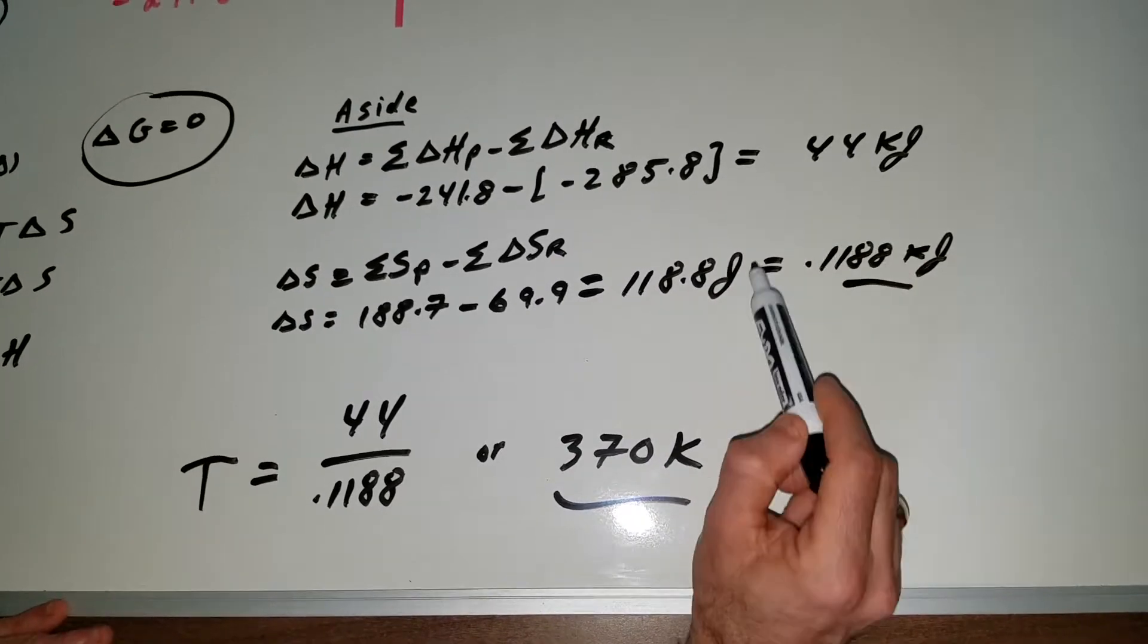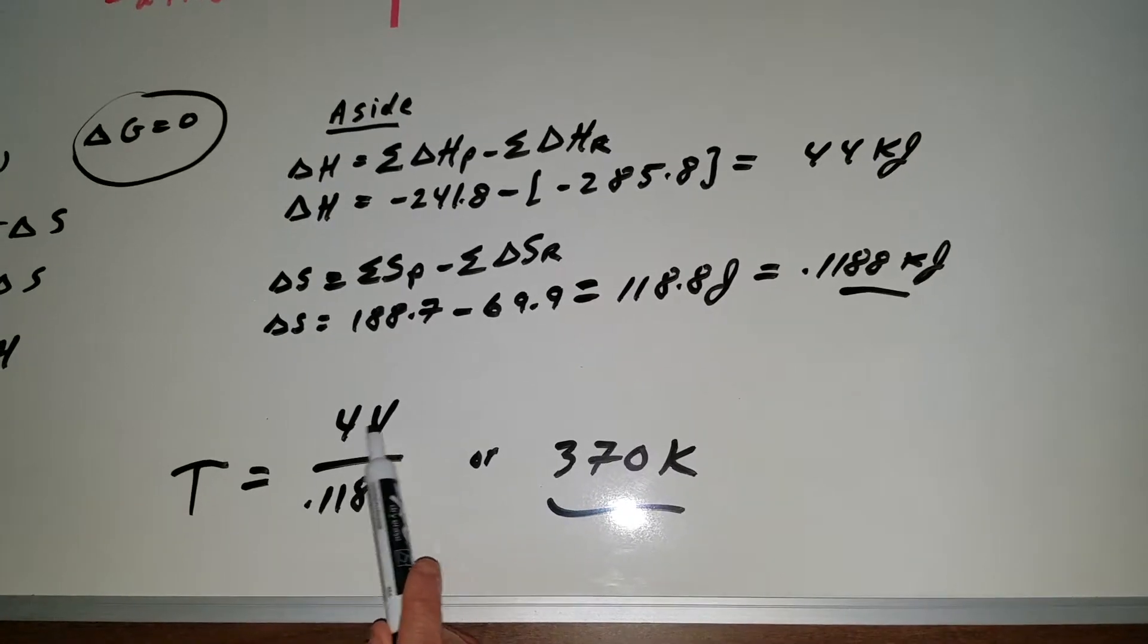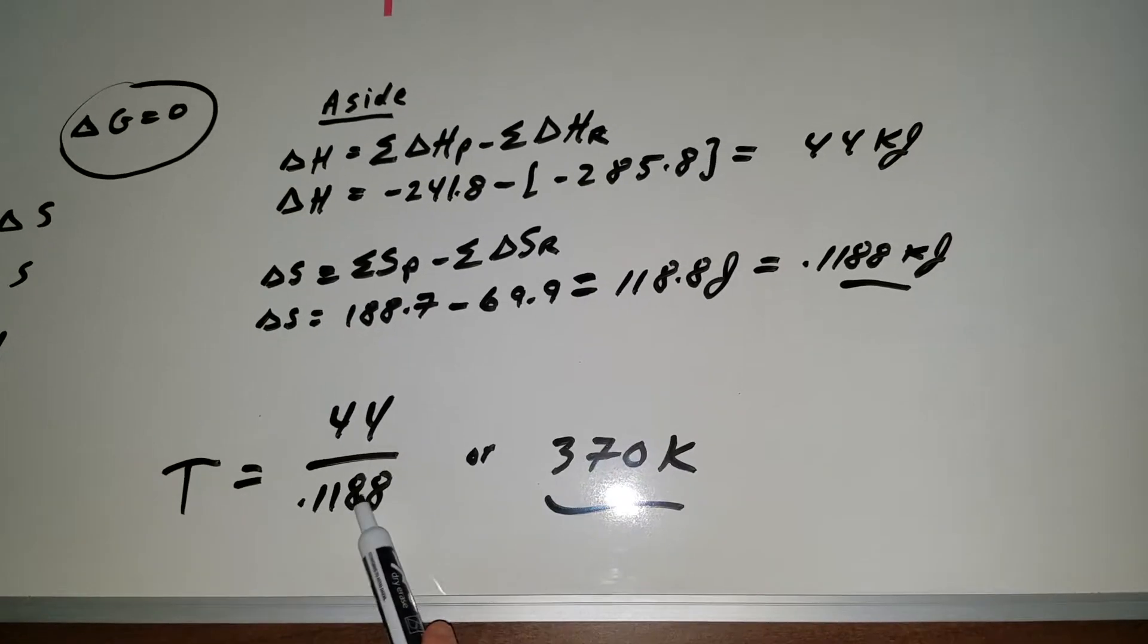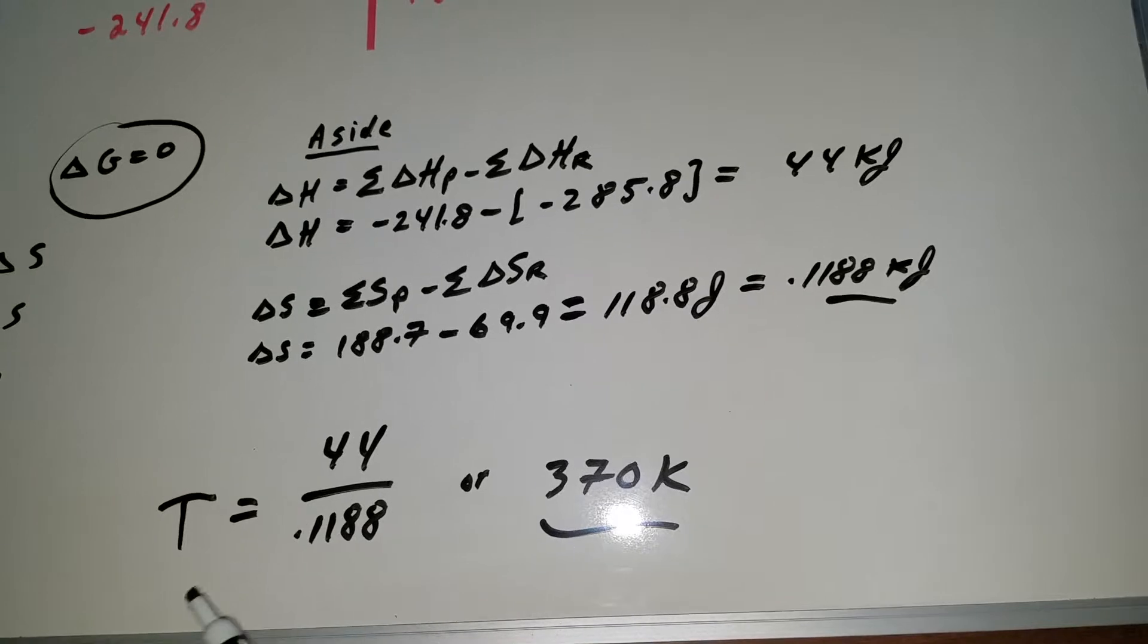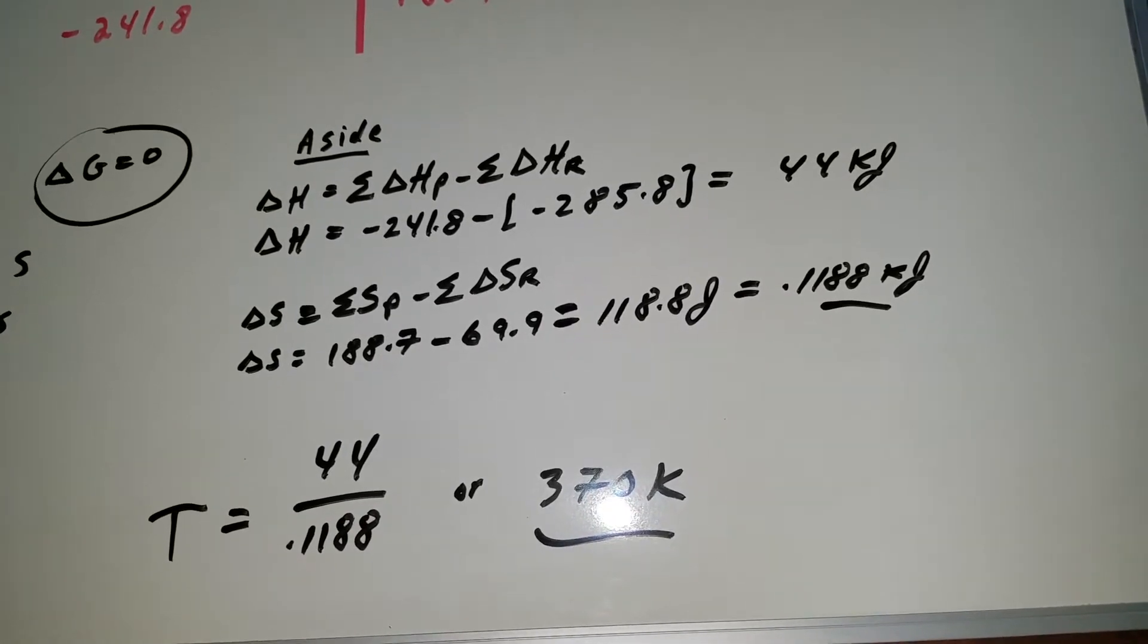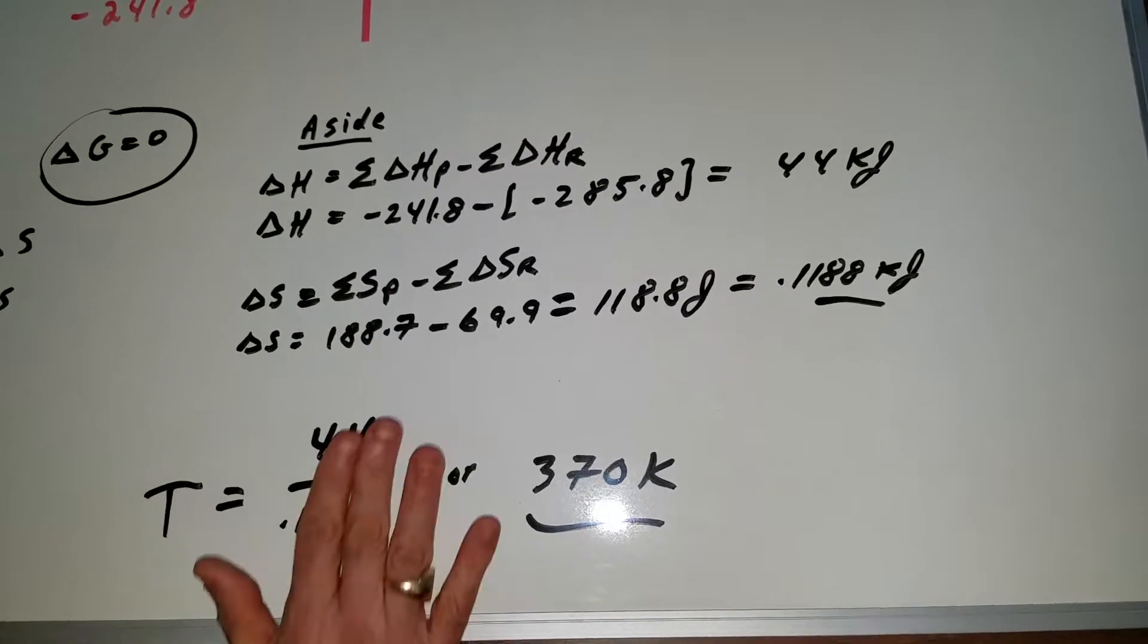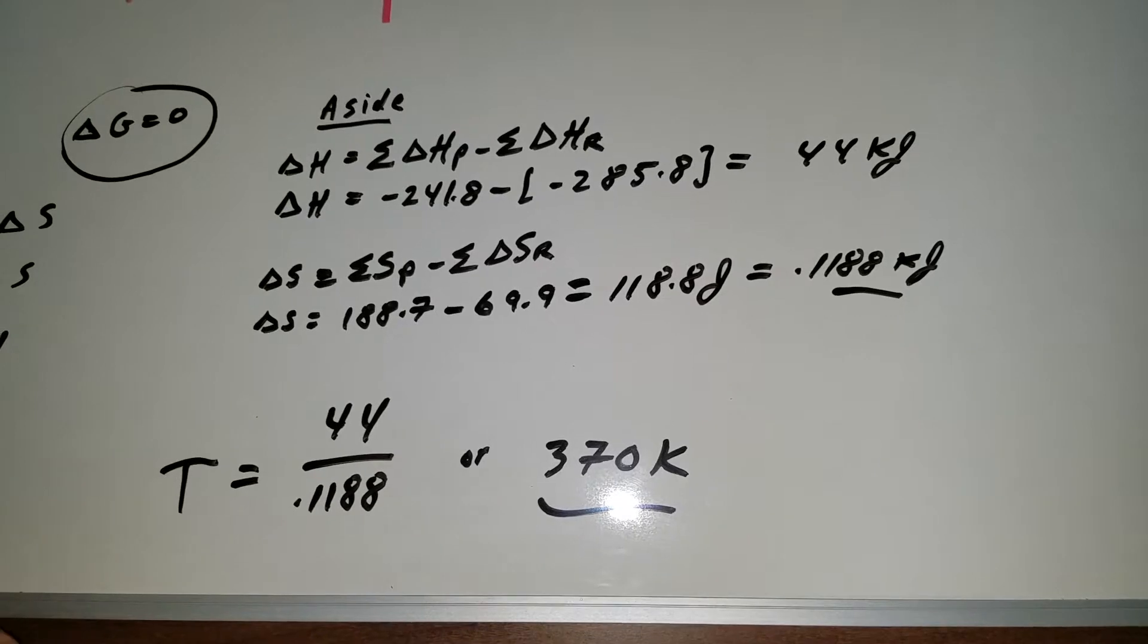Now that I got the delta H and I got the delta S what we're going to do is put it in: it would be 44 over the 0.1188. For the DAT exam that would be probably where we would just leave it for the DAT. For those that want to finish it out with me, if it was 4 over 0.1 or 44 over 0.1 that would put me up around the area of 440 but as you can see